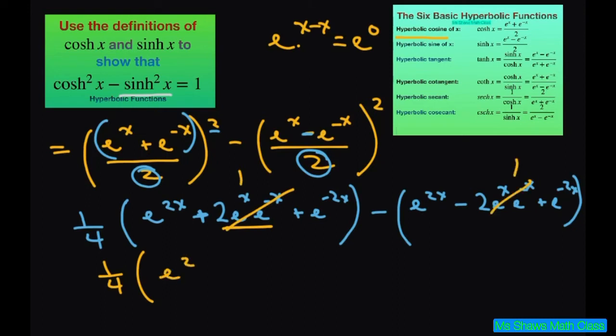I'm going to go ahead and distribute this negative. So, we get minus, I'm going to take away the parenthesis here, minus e to the 2x power and I'll do this one minus e to the negative 2x power. Two negatives make a positive. So, this is going to be plus 2.